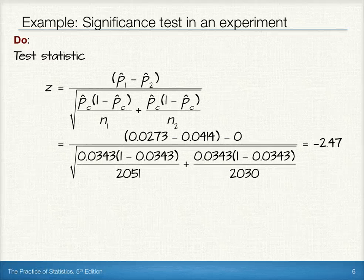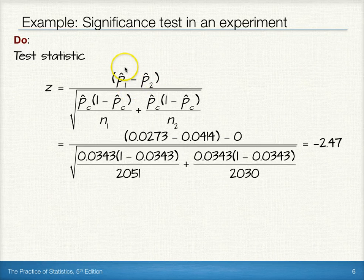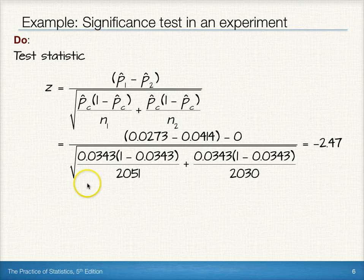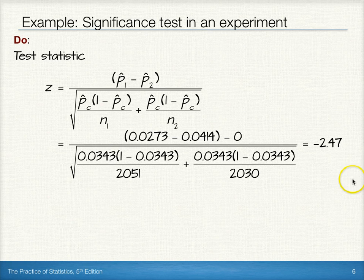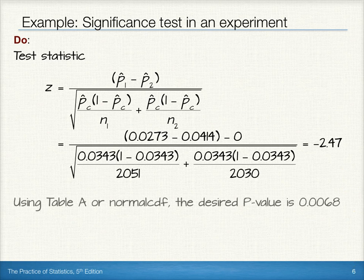For our test statistic, we use the two-sample z-test formula. We observed a difference between our sample proportions and used our pooled proportion in the standard error calculation. Inserting all the appropriate information and performing the calculation, we get a z-score of negative 2.47. Using Table A or normal CDF, the desired p-value in this case is 0.0068.